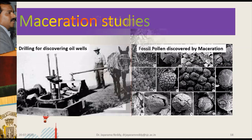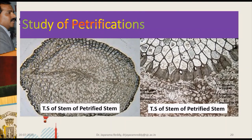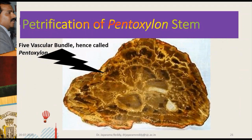You can see here the slides prepared by taking sections of the petrifications. You can see so clearly the midrib of the fossil leaf, which is actually a section of a petrification — when you cut the rock, you get these details. You can see a stem on the left-hand side and a portion of the stem on the right-hand side, showing fine details of fossils preserved as petrifications. This is a very important fossil called Pentoxylon, named because of the presence of five vascular bundles visible in its cross-section.